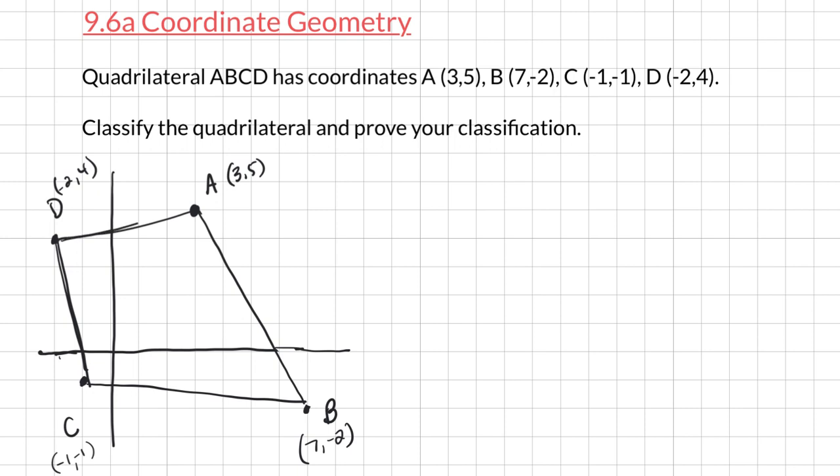If this is a kite, I know that my adjacent pairs of sides are congruent. I would have to show that DC is congruent to DA. And I would have to show that BA is congruent to BC. Alternatively, I could investigate the diagonals and show that they're perpendicular and that AC is bisected.